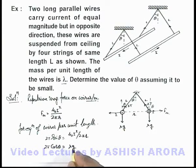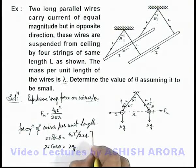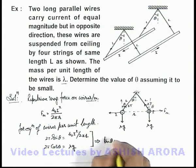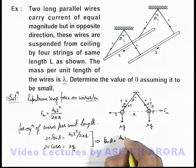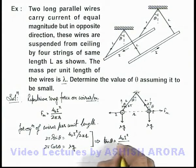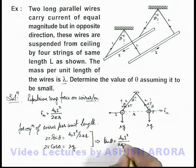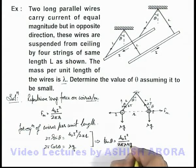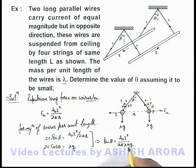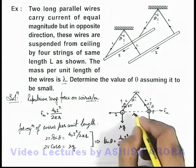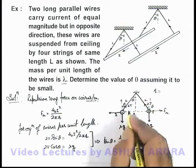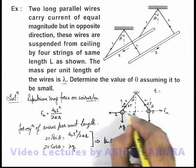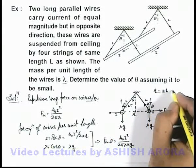So in this situation, if we divide the two equations, this will give us tan theta is equal to mu naught i squared by 2 pi lambda r g. Now in this situation, this r we can simply substitute as twice of L sin theta, because this half of r is L sin theta. We can write it 2L sin theta.